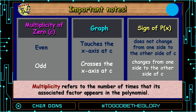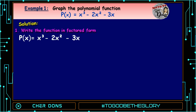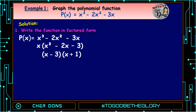Let's have an example. Example number 1: graph the polynomial function P(x) = x³ - 2x² - 3x. Step number 1: write the function in factored form. We have P(x) = x³ - 2x² - 3x. Let's write x outside — then x² - 2x - 3 remains. We can factor it as (x - 3)(x + 1). So P(x) = x(x - 3)(x + 1).